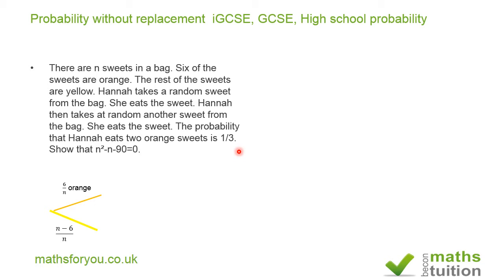Now for the second pick: if Hannah picked orange first time round, there are only five orange sweets left and one fewer sweet in the bag overall. So the probability of picking an orange sweet second time round is five divided by n minus one. If she picked orange first, there are still n minus six yellow sweets left, so the probability of picking a yellow sweet second is n minus six divided by n minus one.